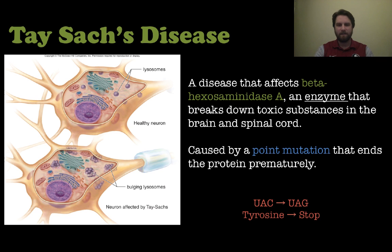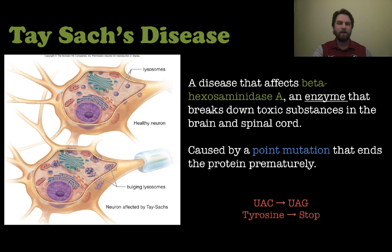The other disease is Tay-Sachs, which is inherited — mostly by people of Eastern European Jewish descent. This disease affects beta-hexosaminidase A, an enzyme that breaks down toxic substances that build up in your brain and spinal cord. You can see a picture of a normal neuron on top and an affected one on the bottom. Tay-Sachs is caused by a point mutation that ends the protein prematurely: a codon coded as UAC for tyrosine is changed to UAG — one of the three stop codons — so the protein is stopped prematurely and no longer functions properly.